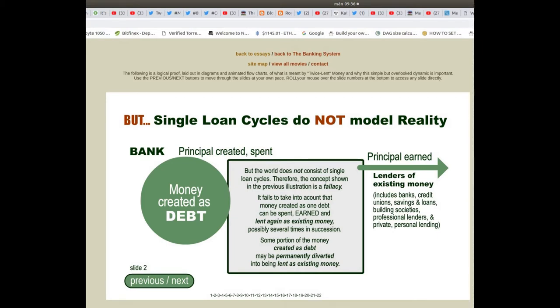Principle earned. Lenders of existing money include banks, credit unions, savings and loans, building societies, professional lenders, and private personal lending.